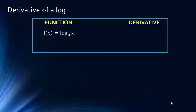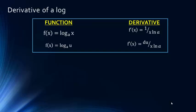Our first function is just a basic log — log base a of x. When we're taking the derivative of this, the derivative is equal to 1 over the argument x times the natural log of the base, so x times natural log of a is all in the denominator. We might also be taking the log of a function u, which is a function of x — you might think of it as the chain rule.